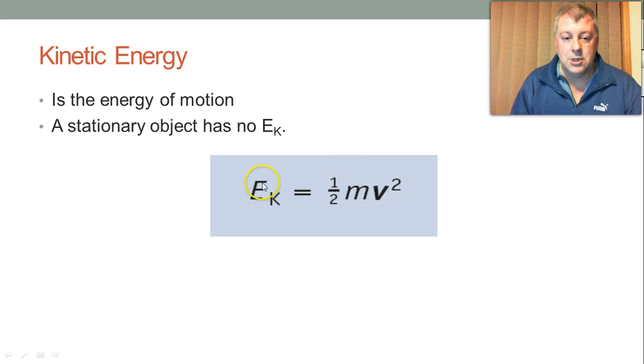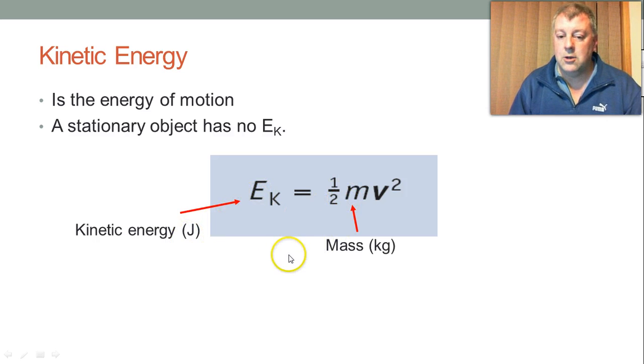The formula for kinetic energy is EK equals half mv squared. So your kinetic energy, because it's energy, it's in joules. Your mass standard units is in kilograms and your velocity will be in meters per second.